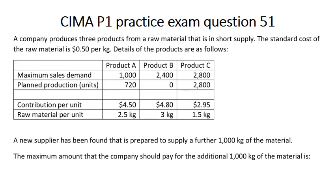We've got products A, B, and C — with maximum sales, planned production, contribution per unit, and raw material per unit. We're told a new supplier has been found who is prepared to supply a further thousand kilograms of the material, and our job is to find the maximum amount that the company should pay for that additional thousand kilograms of material. We can tell that this is a limiting factors question because of the expression 'short supply' within the very first sentence.